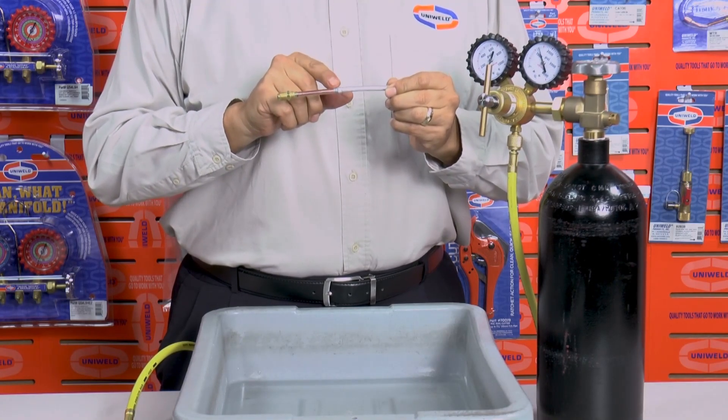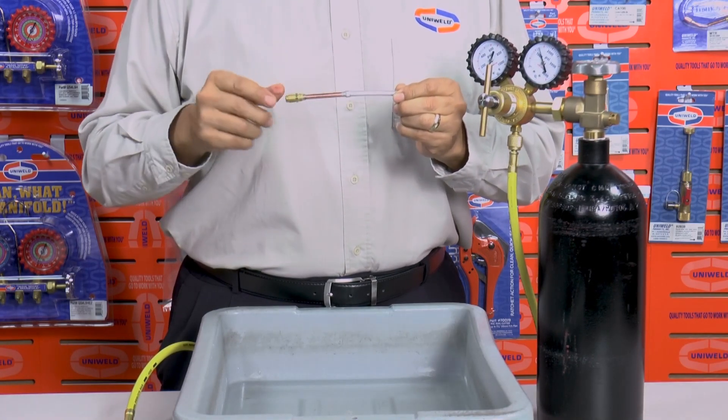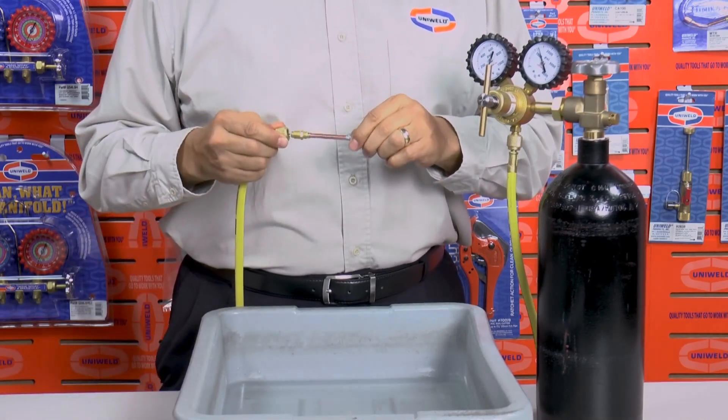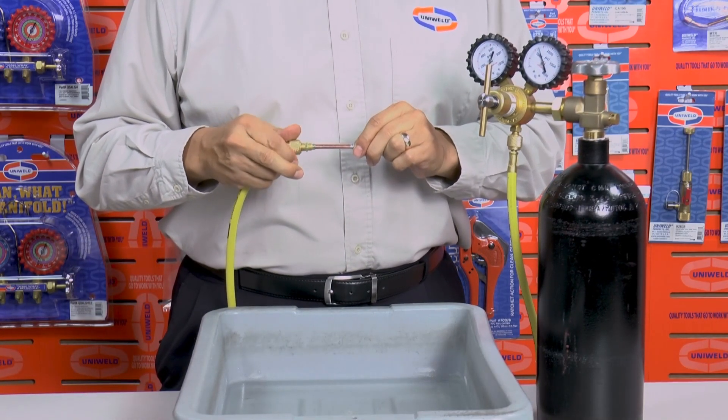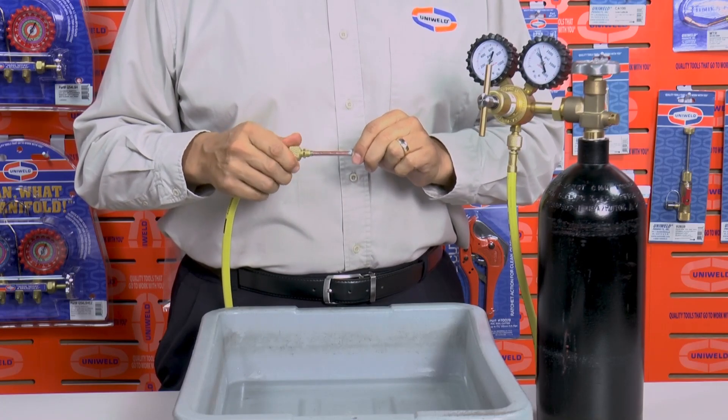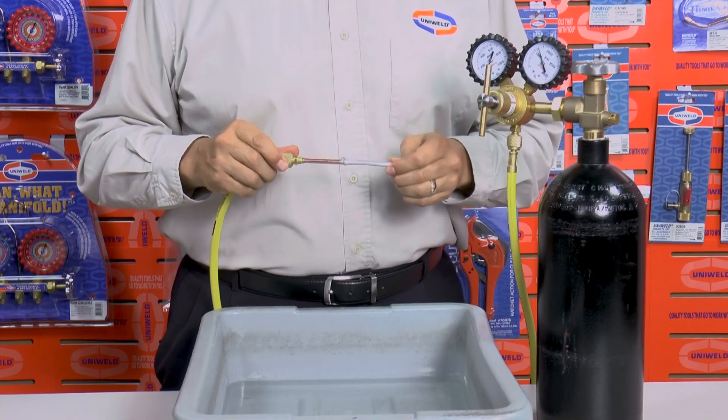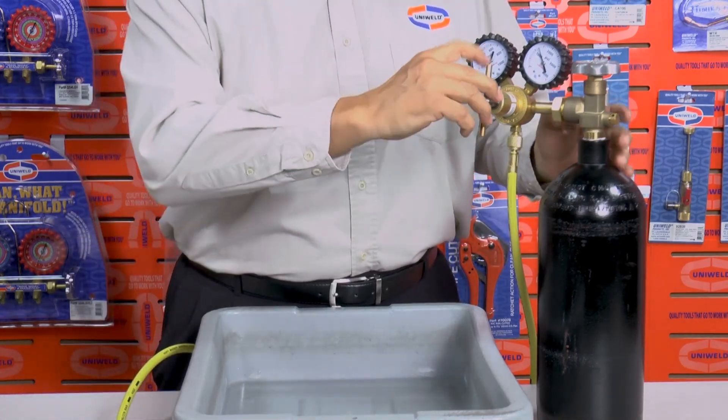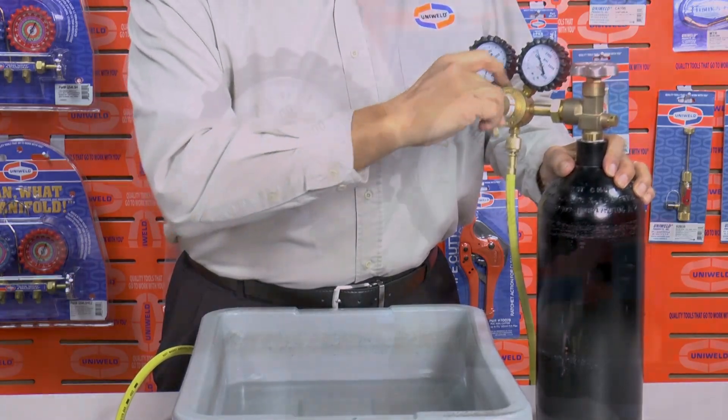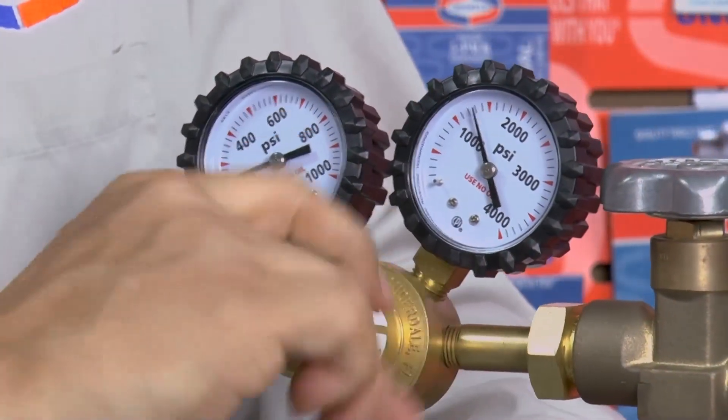Let's go ahead and pressure test the joint we have soft soldered by connecting the access valve to UniWeld's RHP 800 nitrogen regulator and apply 800 pounds of pressure to the assembly. UniWeld's RHP 800 nitrogen regulator is ideal for meeting today's OEM stringent requirements for high pressure testing and purging.